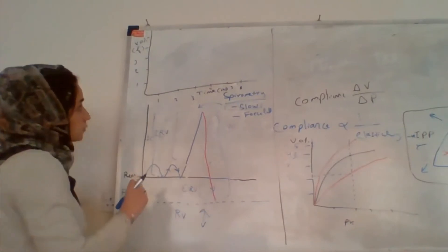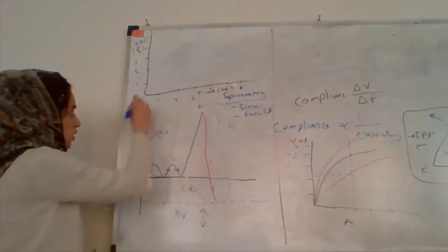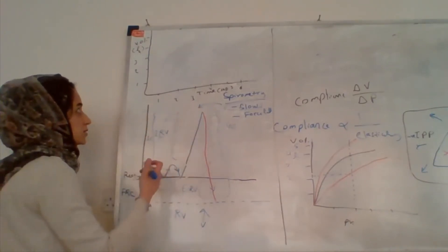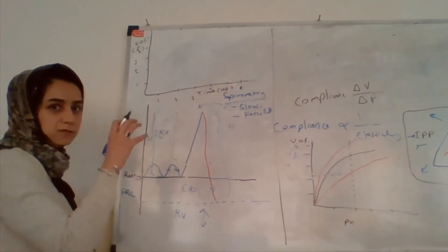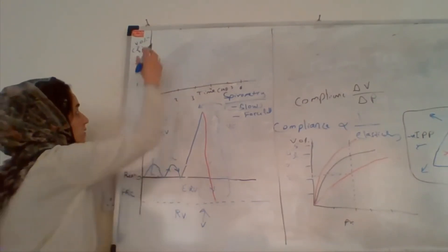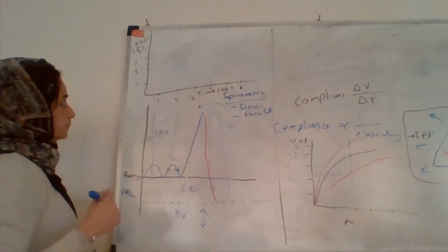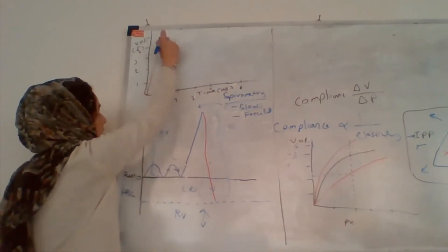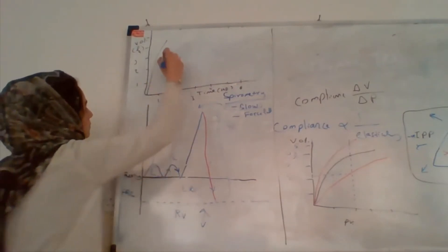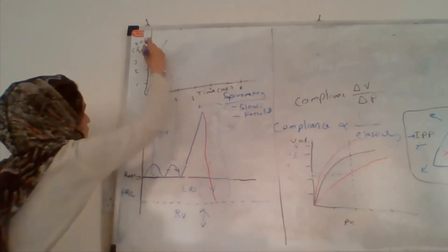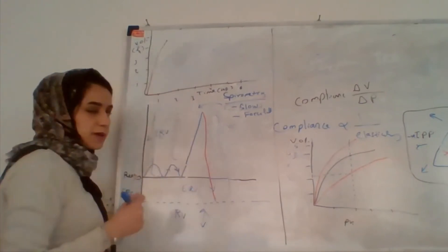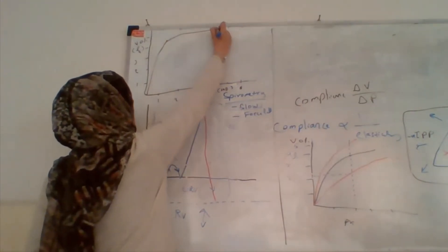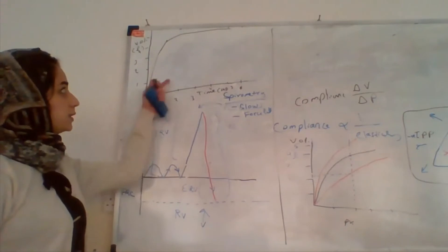So what happens during forceful expiration? We ask the person to take a deep breath in and then perform a forceful expiration. At the beginning of forceful expiration, the volume is at its highest. Then as the person expires, there is a rapid rise in the volume expired. The shape of the curve for a normal patient will look like a rapid rise followed by a plateau.